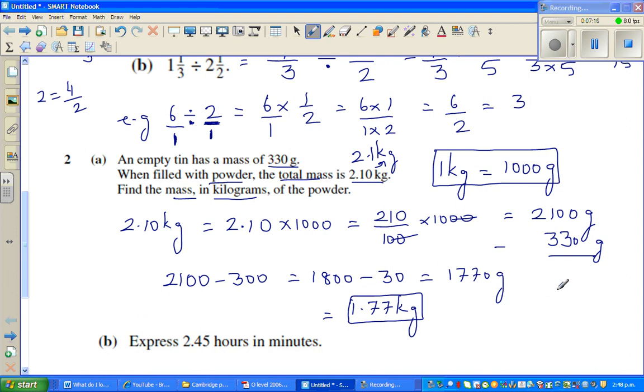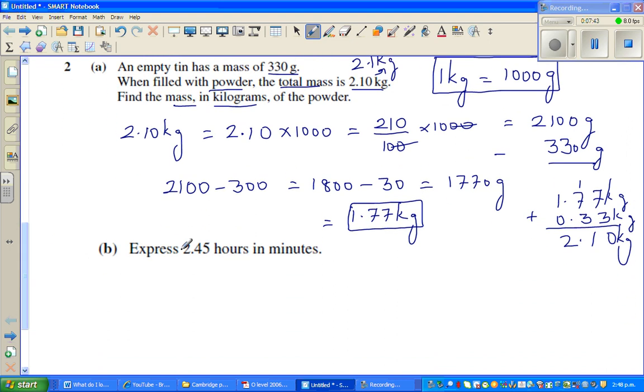And how can you check your answer? 1.77 plus 0.33. If you add this up, so this is 10, 2.10. So that's right. This is in kgs, this is also in kgs. So this is the weight of the powder. This is the weight of the tin expressed in kgs. Now I'll finish with this question.